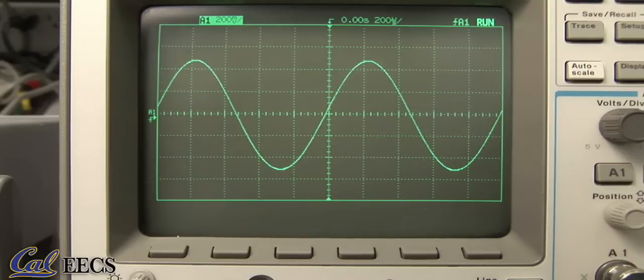The two channels operate independently of each other and having two channels is very useful since you often need to see the relationship between signals.